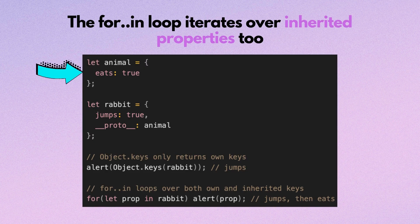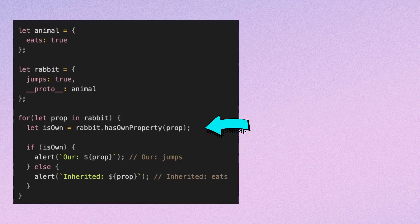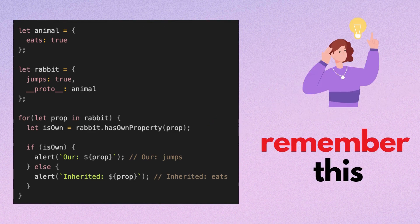The for...in loop iterates over inherited properties too. If that's not what we want and we'd like to exclude inherited properties, there is a built-in method hasOwnProperty. We can filter properties like this. Almost all other key-value getting methods such as Object.keys, Object.values, and so on ignore inherited properties. Remember this trick — it's very likely that you'll encounter this question in an interview.